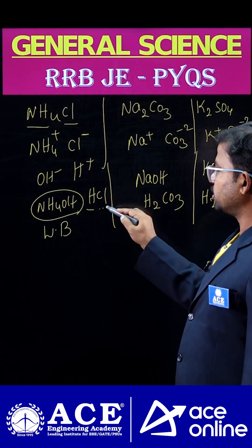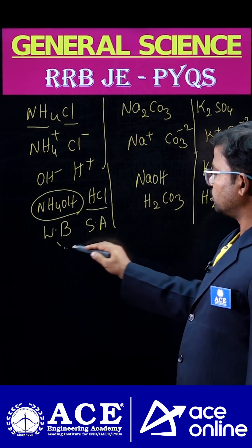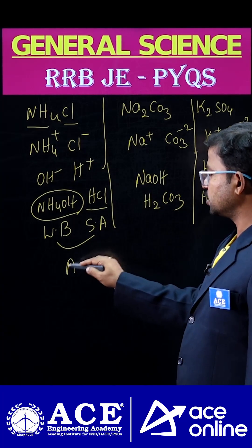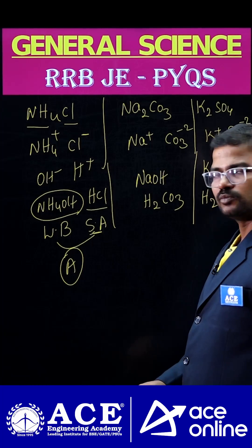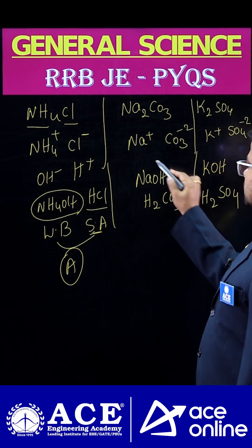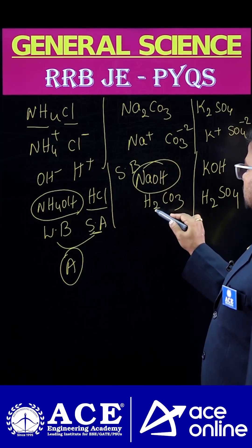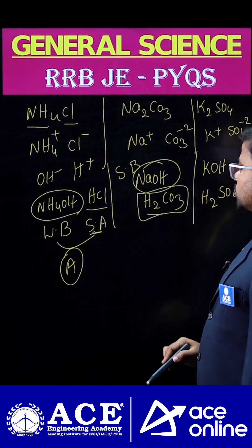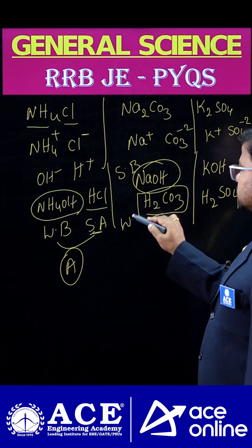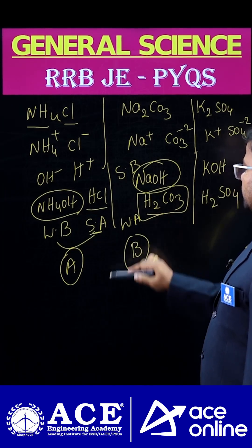For NH4Cl, we have NH4OH (weak base) and HCl (strong acid). Since the acid is stronger than the base, the solution is acidic in nature. For Na2CO3, we have NaOH (strong base) and H2CO3 (carbonic acid, which is a weak acid). Since the base is stronger, the solution is basic in nature.